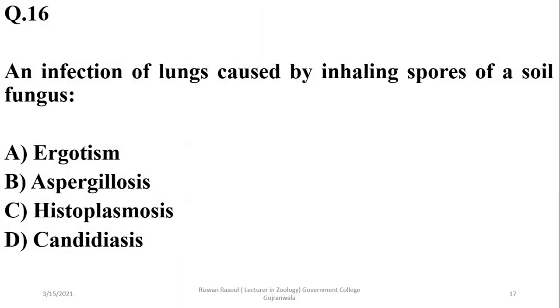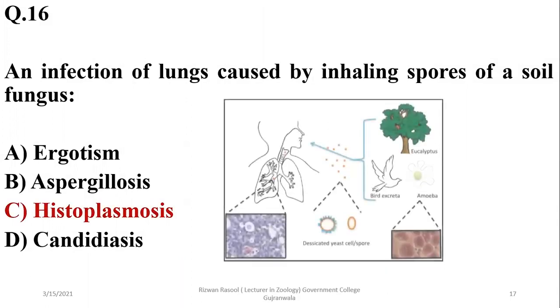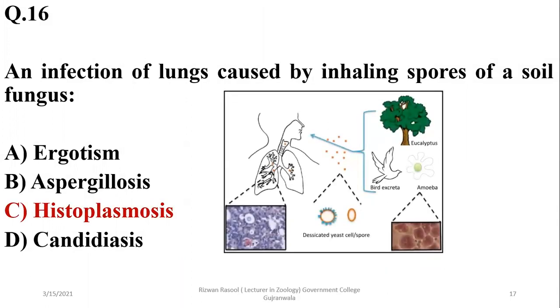An infection of lungs caused by inhaling spores of soil fungus is histoplasmosis, so C is the right option. It's caused by inhaling spores infected with a fungus which infects bird feces.